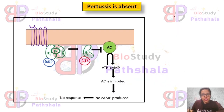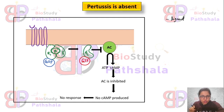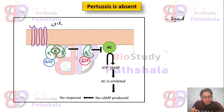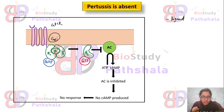First scenario: Pertussis toxin is absent, meaning no ligand is available to bind with the receptor — the GPCR. This GPCR acts through the Gi alpha subunit. Now, when no ligand is present, this Gi alpha subunit is in the GTP-bound state, and the GTP-bound alpha subunit shows its inhibitory effect on its effector, adenylate cyclase.